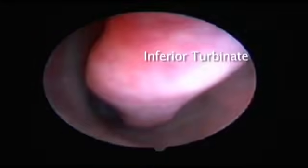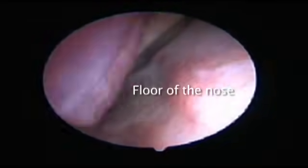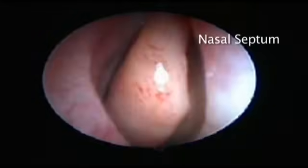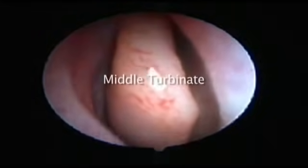you can see the inferior turbinate, the flora of the nose, the septum, and the middle turbinate.